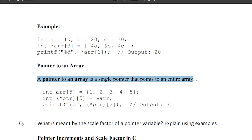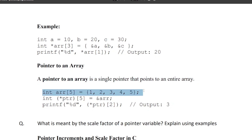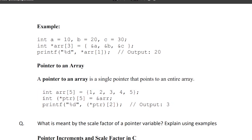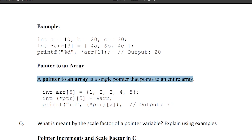Example: one array declared as int arr[5] with five elements. Then the pointer declaration: integer within parentheses is pointer — int (*ptr)[5]. Round brackets have higher precedence than square brackets, so preference is given to the pointer first. So we read: pointer to an array of size 5. This is a single pointer that points to an array of size 5.